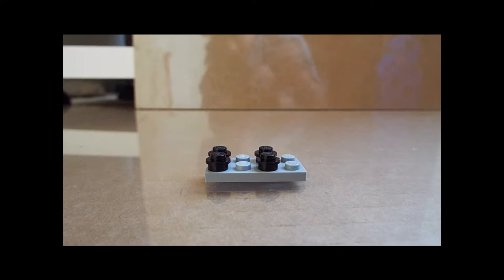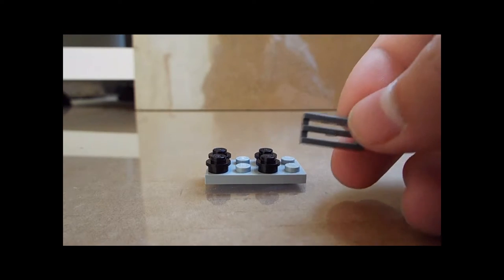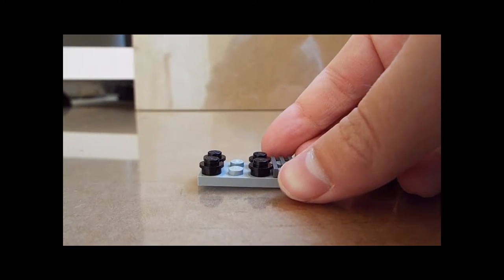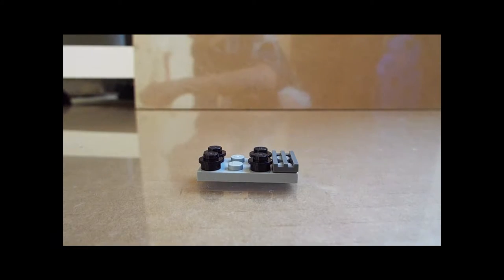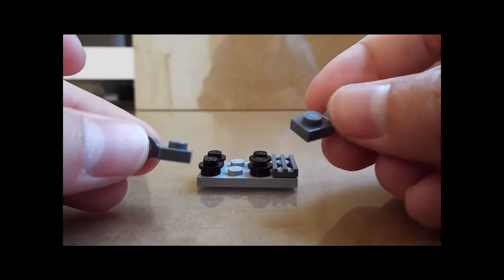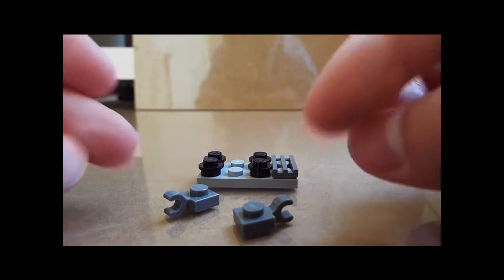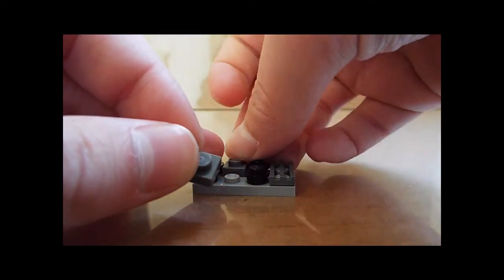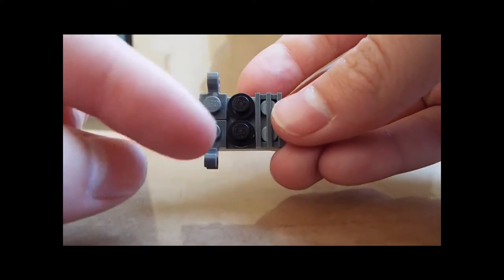Then you're going to take this gray vent piece. Put it right in the front here. Then you're going to take these two clamper pieces and put them like this. See that? Like that.